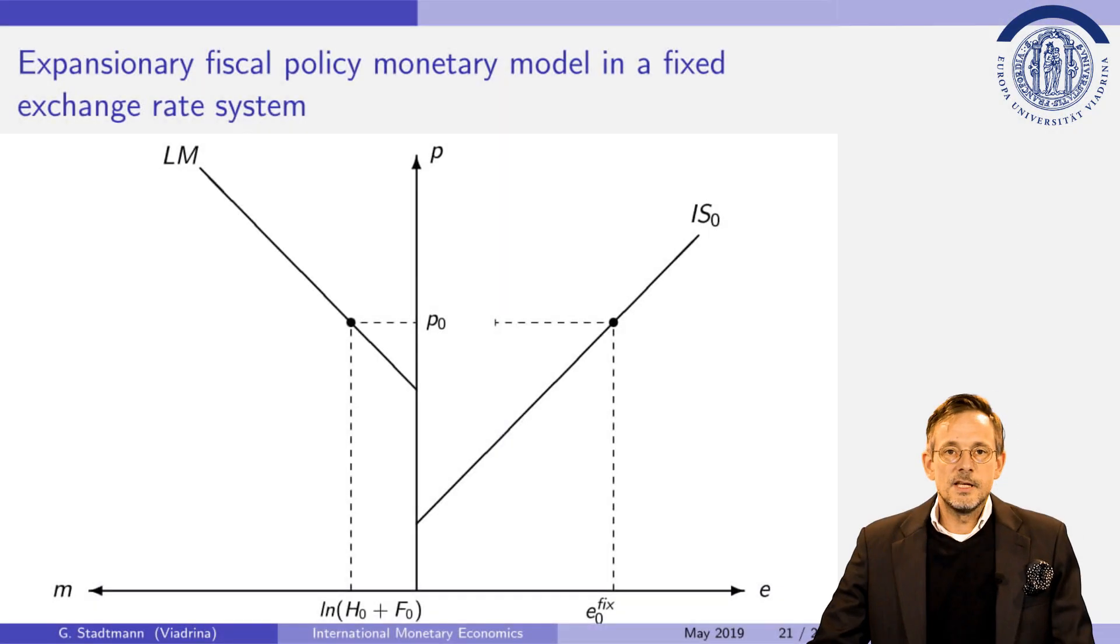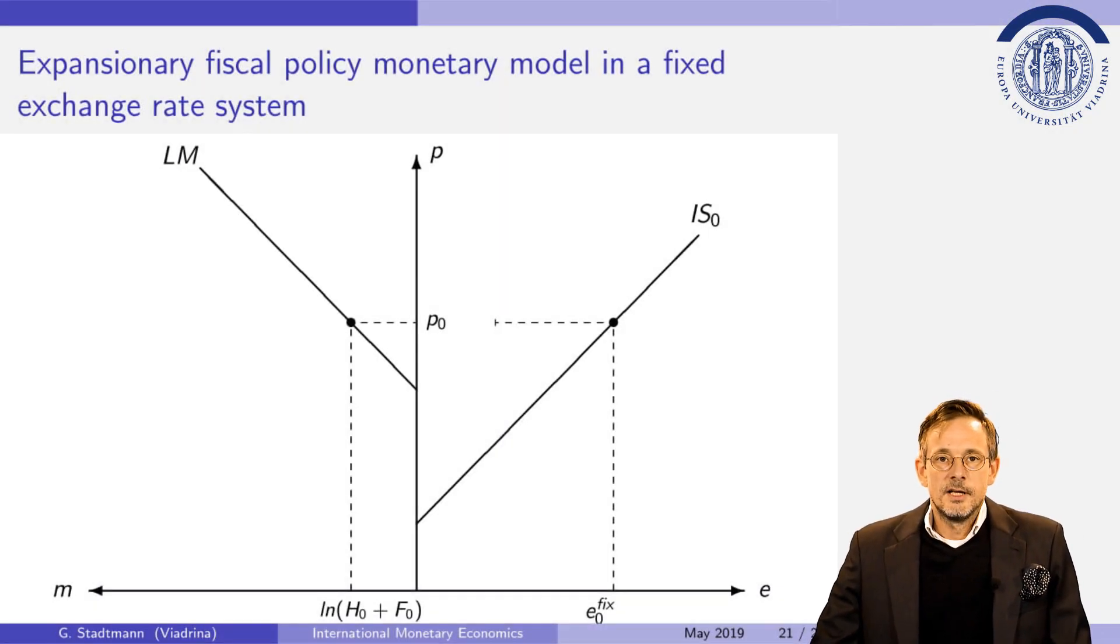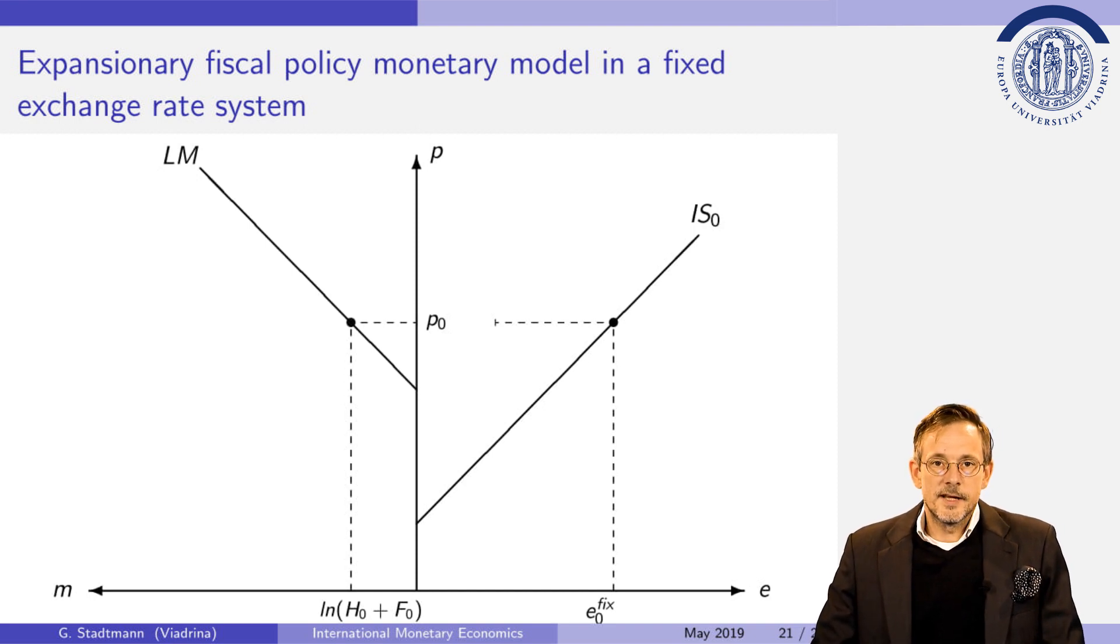In this slide you can see the initial situation. The central bank has decided upon money supply equal to this initial level. Goods prices are equal to P0 and the exchange rate is equal to the fixed exchange rate level E0.